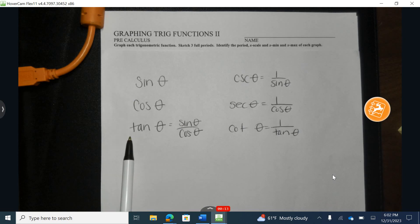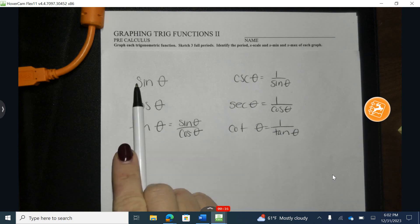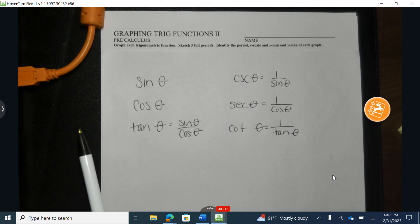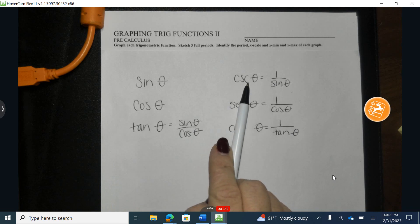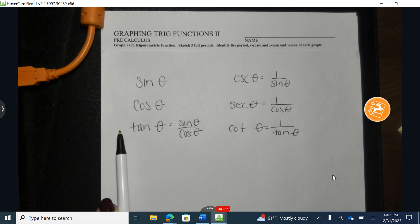Now, each of these three main trig functions has a reciprocal. The reciprocal of sine, not pronounced sin, the reciprocal of sine is cosecant, the reciprocal of cosine is secant, and the reciprocal of tangent is cotangent.